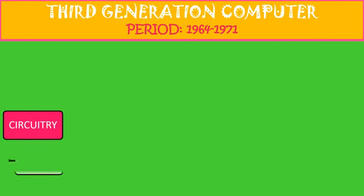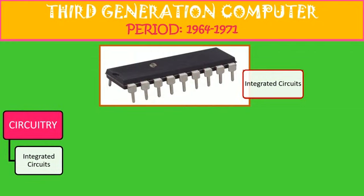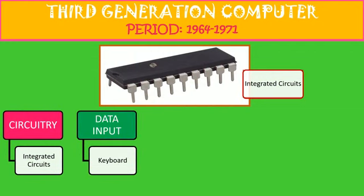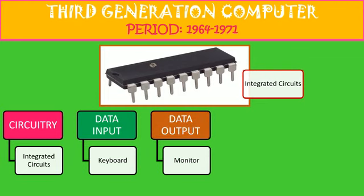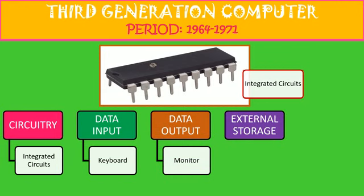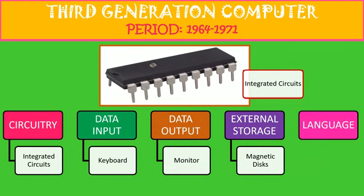Now we come to the third generation computers. The circuitry used was integrated circuits — you can see the picture here. The data input was given with the help of a keyboard; now the keyboards came into existence. For output, monitors were there in the third generation. External storage was in the form of magnetic disks — the hard disks which are there today are the magnetic disks. The language used was PASCAL, FORTRAN, and COBOL.